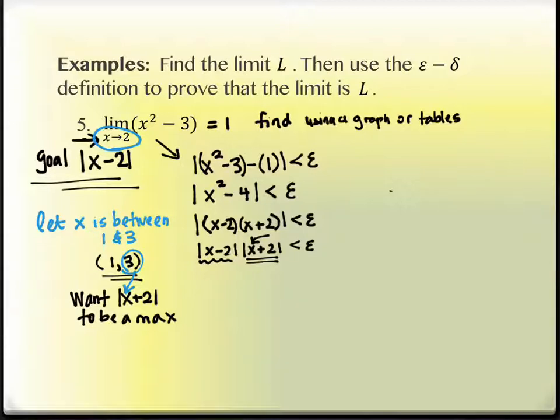So this will end up being, we'll say, let x equal three. We can pick anything in there that would make it a max. We're just going to choose three. So if we let x equal to three, now I have that x minus two that I wanted up here. I have three plus two here, so I've got a five there.